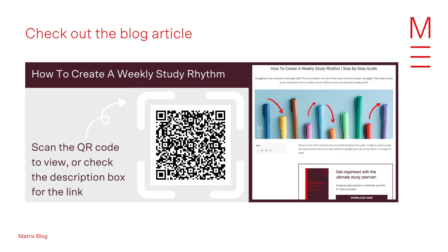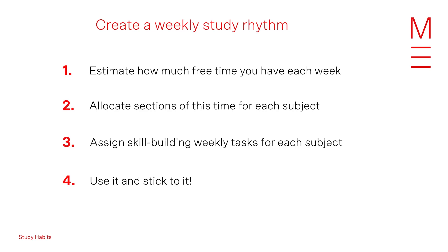Briefly, what you want to do is: first, estimate how much free time you have on a weekly basis; decide how much time to allocate to each subject; weigh up your strengths and weaknesses; then assign tasks to be completed each day on a weekly basis. Within each subject, balance the different skills you need to build consistently. Use it and stick to it. Because there are only so many hours in a day, you need to prioritize working on weaknesses over strengths, while not leaving your stronger areas unsupported.